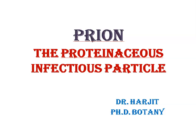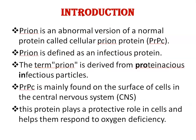Today, we will discuss prion — proteinaceous infectious particles. Prion is an abnormal version, or in other words, a disease-causing form of a normal protein called cellular prion protein. In simple terms, prion is defined as an infectious protein, and this term prion is derived from proteinaceous infectious particles.